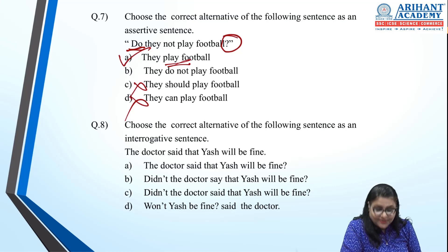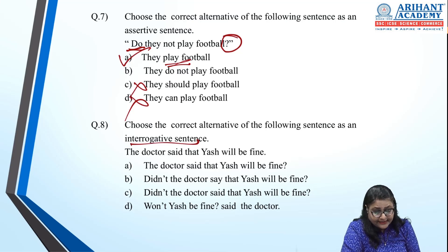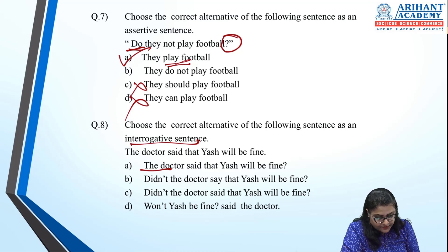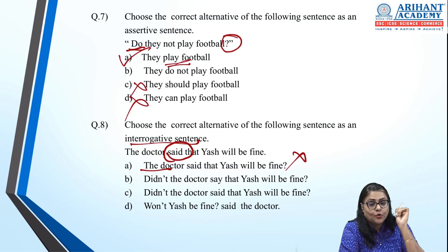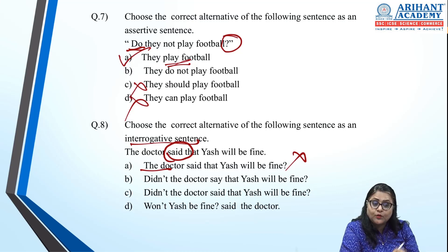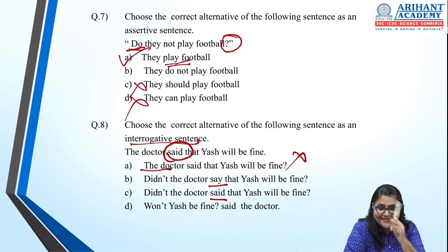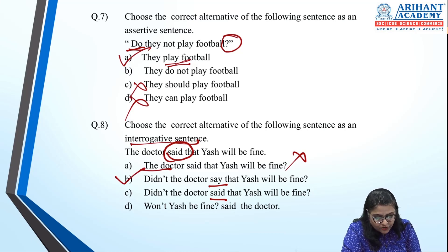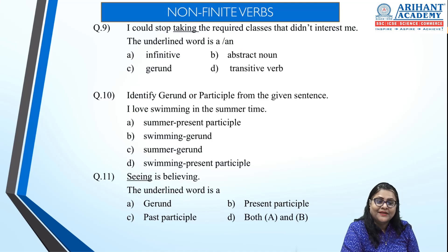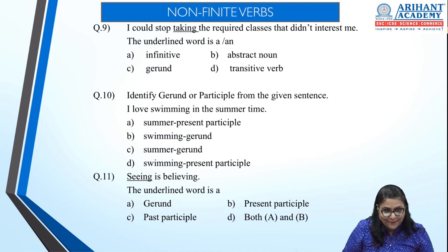Eighth: change to interrogative. 'The doctor said that Yash will be fine.' The sentence cannot begin with 'the', so the first option is wrong. 'Said' is past tense, so the question must begin with 'did.' Between 'did the doctor say' and 'did the doctor said', the correct one is B — 'Did the doctor say?' — because there cannot be two past tenses in one sentence.